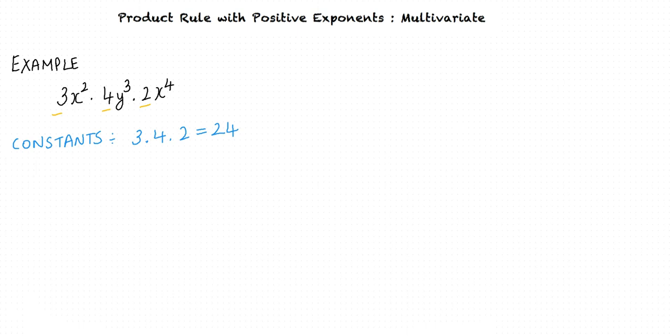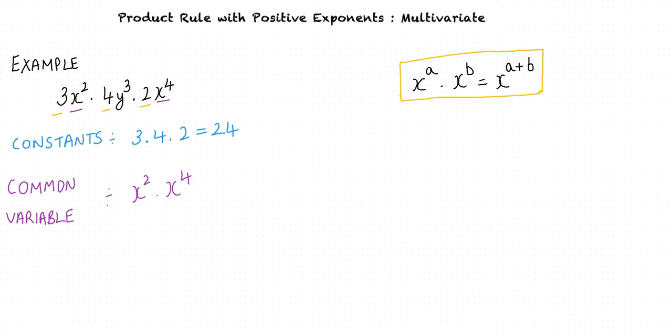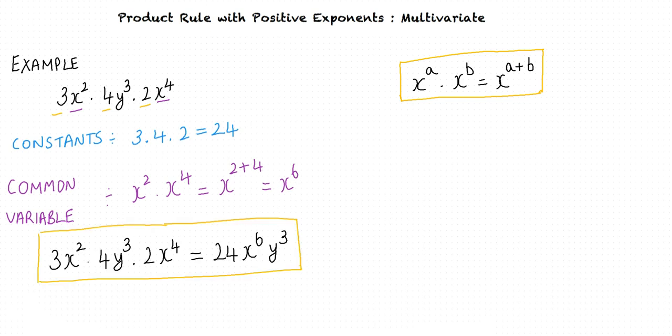Next, we identify the product of same variables with positive exponents. Here, we have x squared and x to the power 4. We are required to determine the product x squared times x to the power 4. From the product rule, we know that x to the power a times x to the power b equals x to the power a plus b. So x squared times x to the power 4 equals x to the power 2 plus 4, which equals x to the power 6. Finally, we simplify the expression to obtain the product: 3x squared times 4y cubed times 2x to the power 4 equals 24x to the power 6 y cubed.